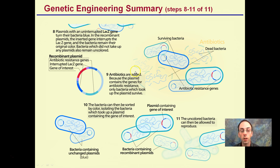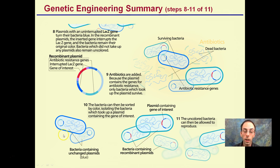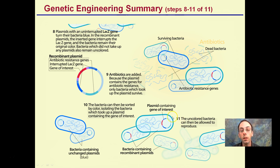That's an important step. Step ten: the bacteria are sorted by color, isolating those which took up the plasmid and gained the gene of interest. The selected bacteria are then allowed to reproduce. We can use antibiotic resistance or coloration to identify the right bacteria. The key goal is to isolate the bacteria that have our gene of interest.